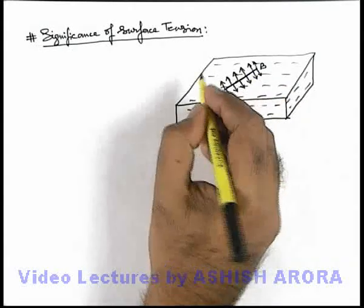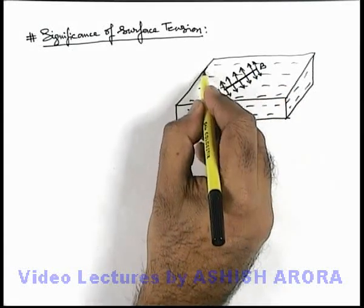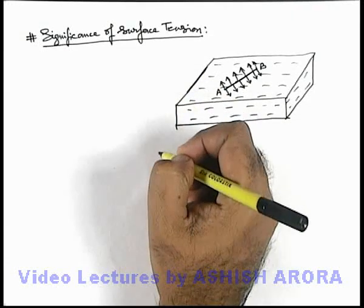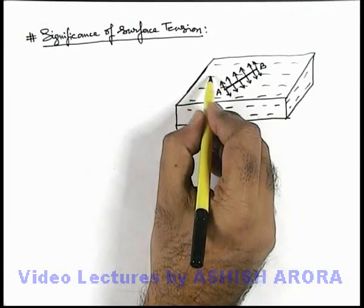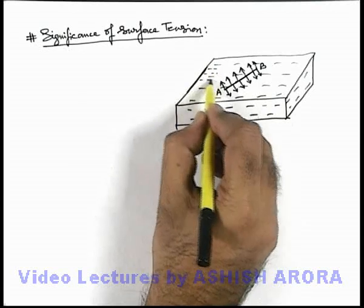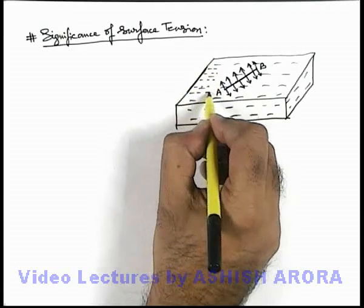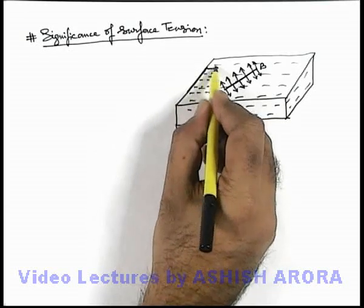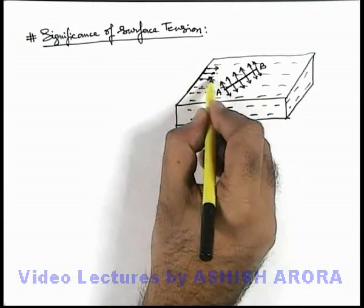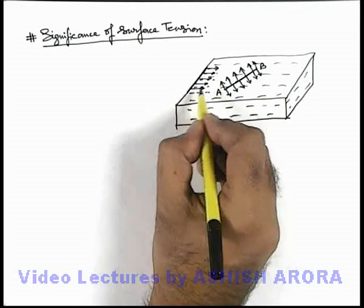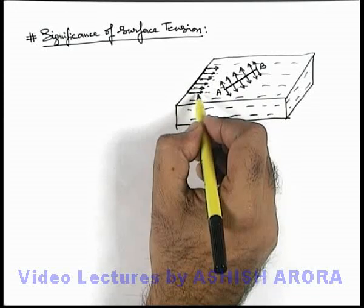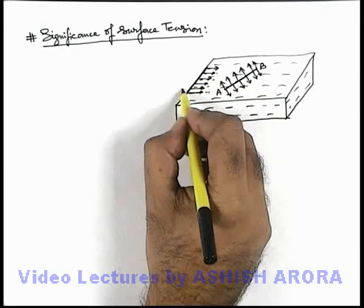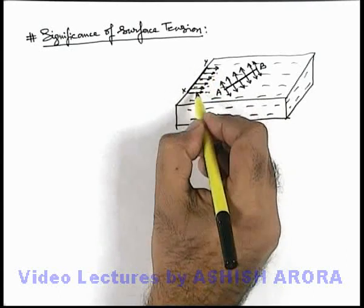But if I talk about a line which is there on the edge of the container, and only on one side of this edge, as liquid is present and on the other side there is no liquid — this line will be experiencing the force only along the surface of liquid. So we can say the net force due to surface tension on this line, say line X-Y, will be non-zero.